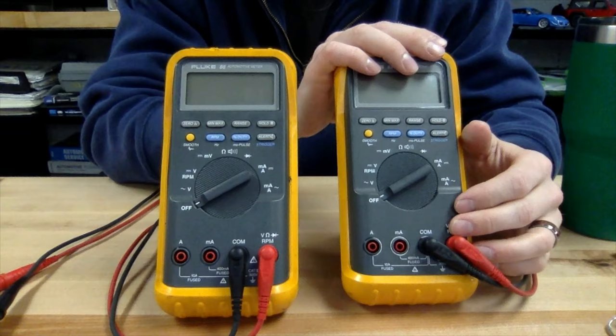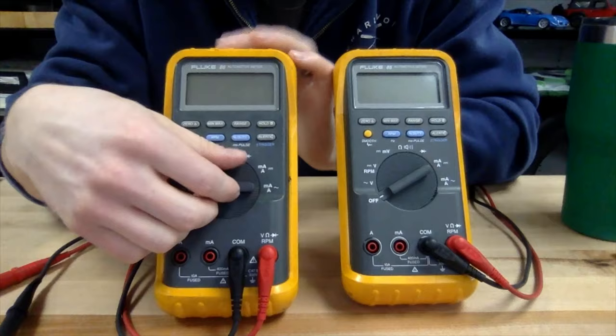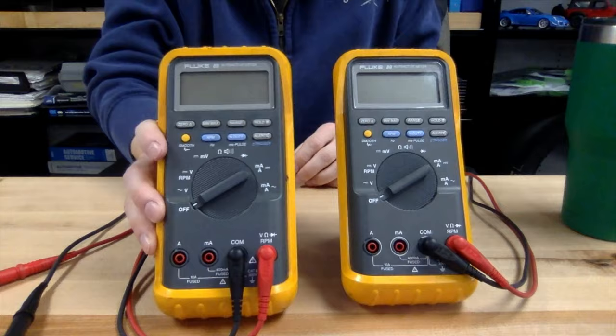Hey there, welcome to my channel. Today we're looking at multimeters. I've got two Fluke 88 multimeters. One functions, the other one does not. There are three common problems that a multimeter might have. I'm going to show you those three problems right now.